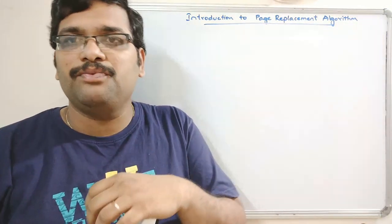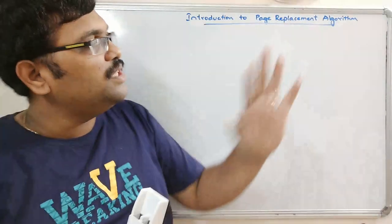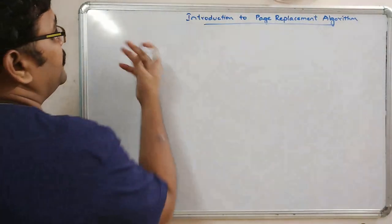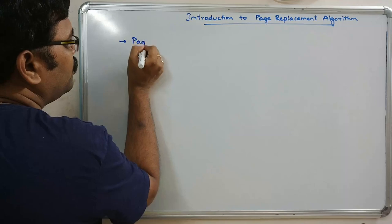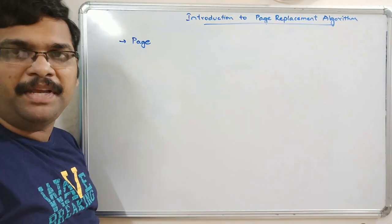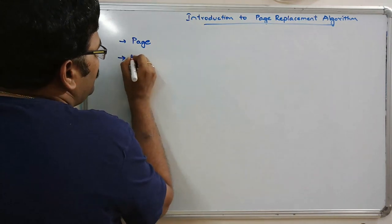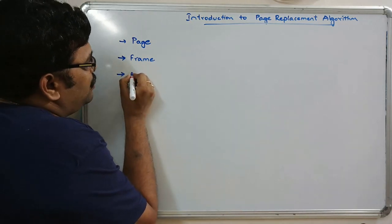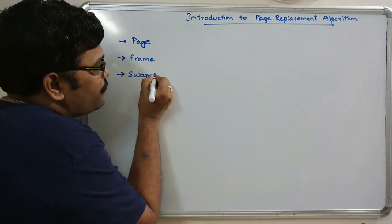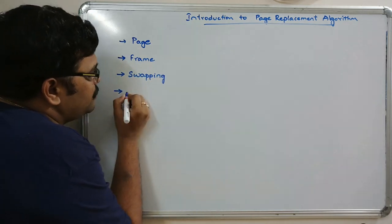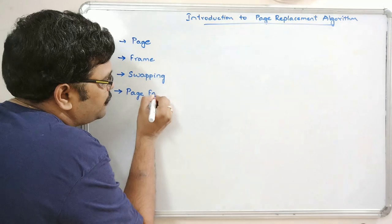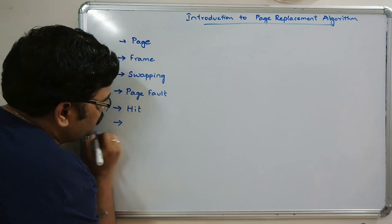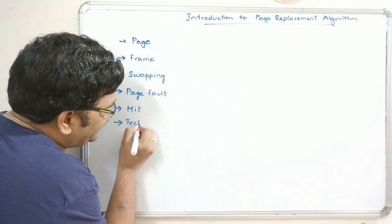In that we will see what are the basic terminologies we need to know before going to page replacement algorithms. The basic terminologies are: first, page; second, frame; third, swapping; fourth, page fault; fifth, hit; and the next one is the techniques used.